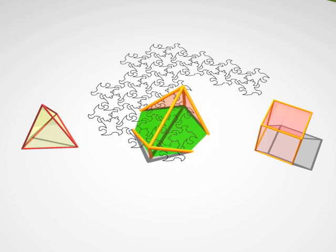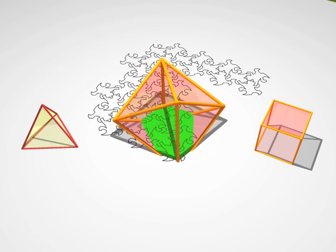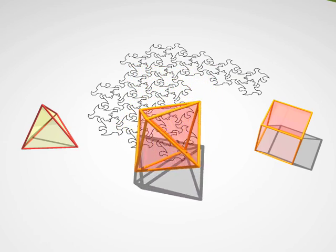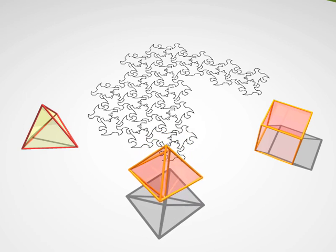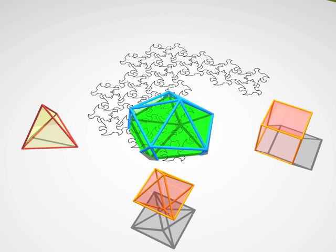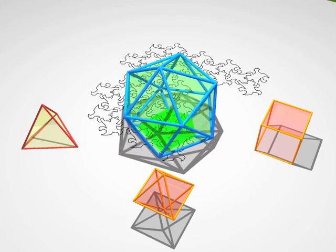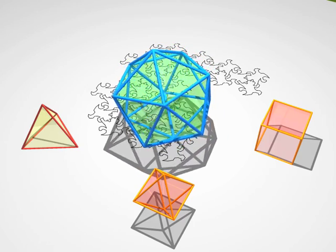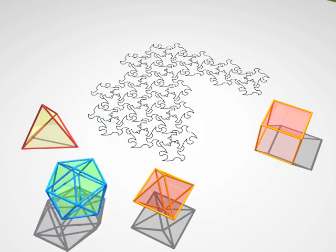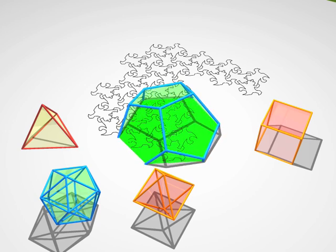And now what? An octahedron, with its eight faces. And an icosahedron, a solid with 20 faces. And finally, the dodecahedron: 12 faces, 20 vertices, and 30 edges.